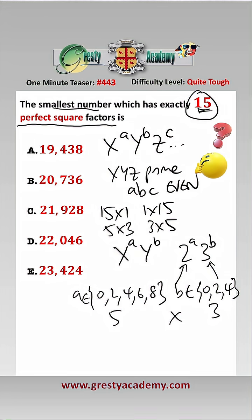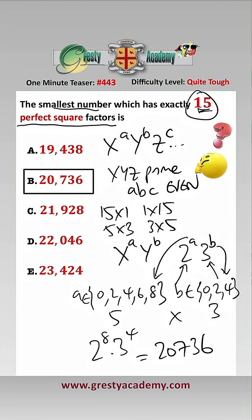Therefore, the smallest number is going to be 2 to the power of 8 times 3 to the power of 4, which equals 20,736, which is answer b.